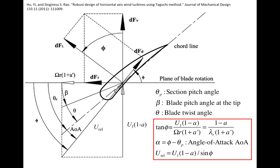The second group of forces is the normal force DFN, which is perpendicular to the rotor plane — that's the force pushing the wind turbine back. We also have the tangential force DFT, which creates the torque that makes the blade rotate. From the lift and drag forces, we can compute the normal and tangential forces, because the normal and tangential forces are simply combinations of components of the lift and drag forces. These two groups are just different partitions of the same set of forces.